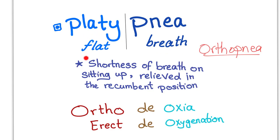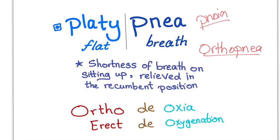Platy means flat and PNEA means breath, from the Greek word NOEA meaning breath. So platypnea means you breathe when lying flat — shortness of breath on sitting up, but you breathe when you lie flat in the recumbent position.